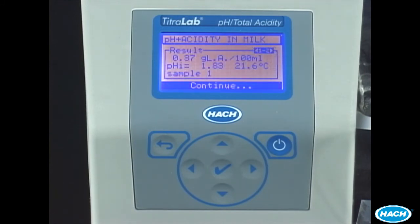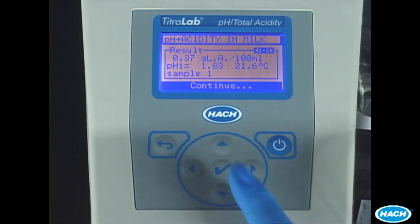The final result is displayed when the titration is complete. In this case, we got 0.37 grams lactic acid per 100 milliliters with a pH of 1.83. Press OK to confirm the result.